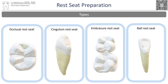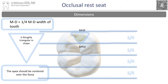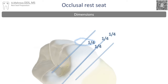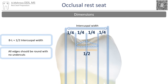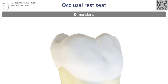Let's start with the occlusal rest seat. The occlusal rest seat is roughly triangular in shape, with the apex towards the center of the tooth and the base towards the outside of the tooth. The dimension of the rest seat should be one-fourth the mesiodistal width of the tooth. The dimension buccolingually should be one-half the buccolingual intercuspal dimension.